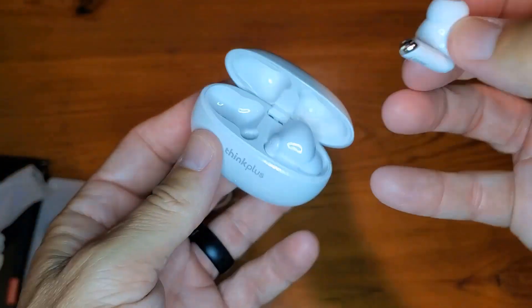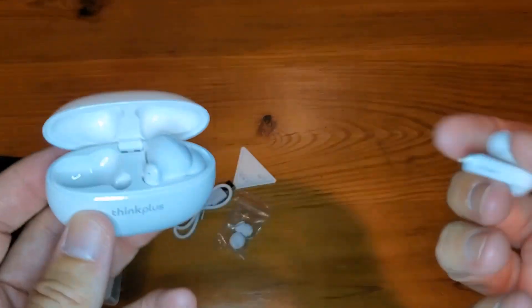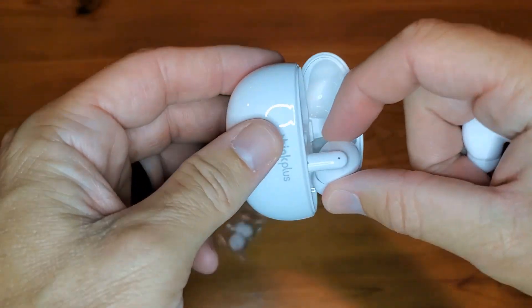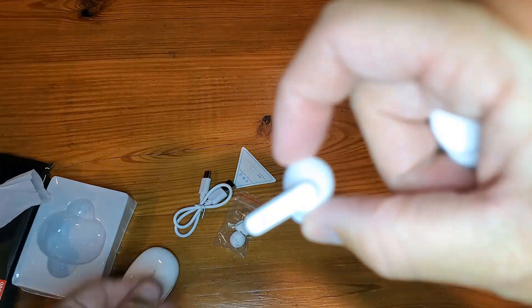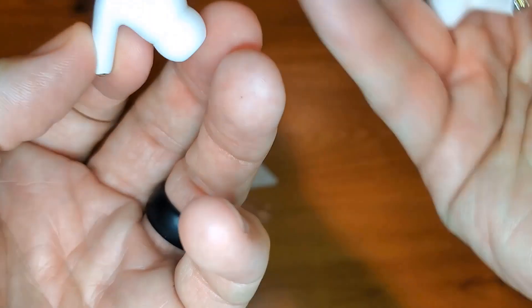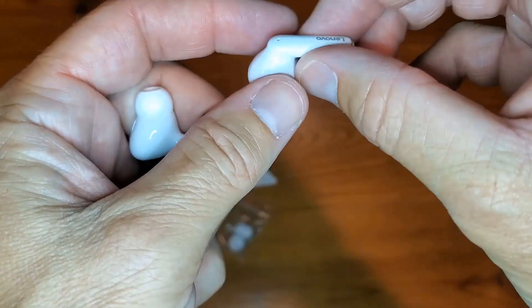magnetically-placed earbuds. So the beauty here is that they're noise canceling, and they're already—as soon as I took them out—I don't know if you can see the blue light—already looking for a signal. It looks like this would be right and left.